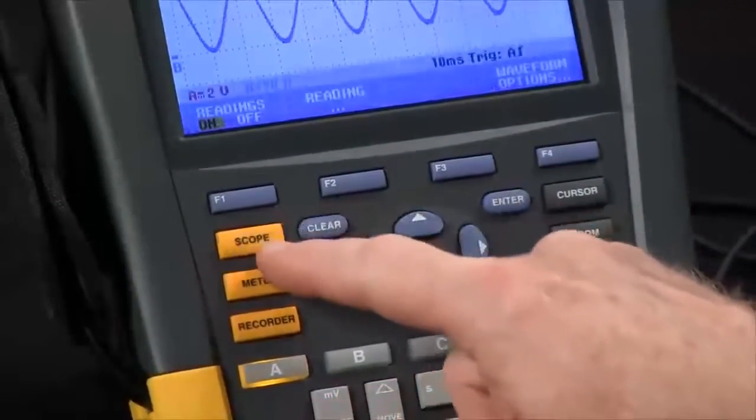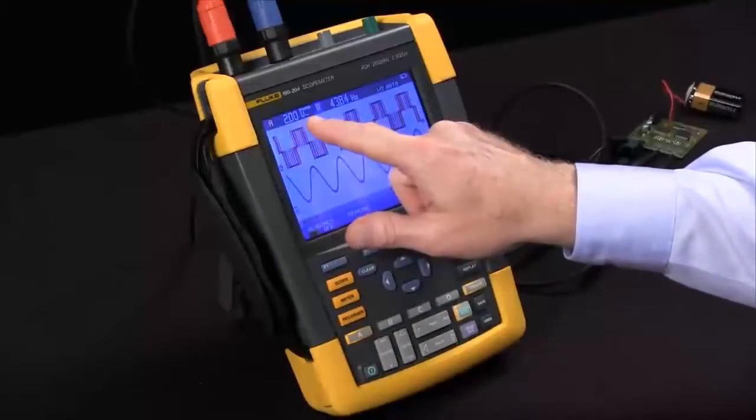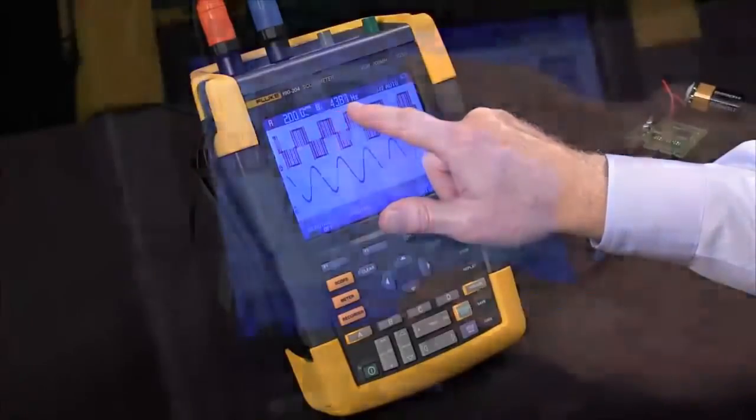We'll hit the scope button. Our readings are already turned on. We can see channel A set for volts PWM and channel B for frequency.